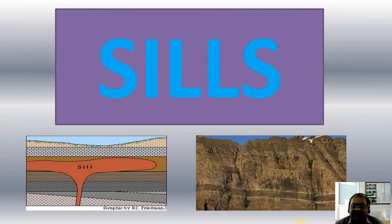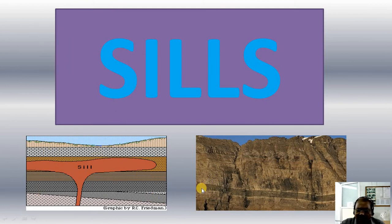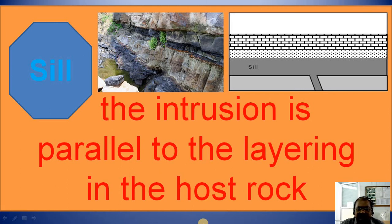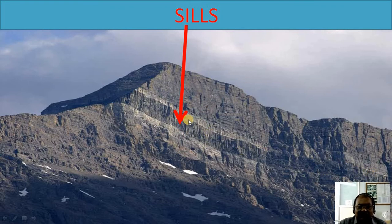Another igneous intrusion is the Sill. See the sill, which is occupied parallel to the bedding planes. This is the field photograph where the sill is clearly seen, occupied parallel to the bedding planes. A Sill is the igneous intrusion which is parallel to the layering in the host rock. Another field photograph shows how the sill is occupied parallel to the bedding planes of the host rock.